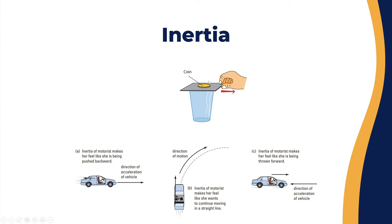To demonstrate inertia with a standstill object: place a paper or plate over an empty cup and put a coin in the center. If you pull the plate very fast without applying force to the coin, the coin falls down and stays still on the base of the cup. That is inertia — the object doesn't want to move unless a force acts on it. Gravity pulls it down, and when the plate is removed, it settles on the next surface without motion.